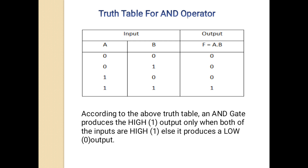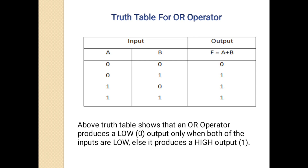In the same way, we can draw the truth table for the OR operator. The only difference is we find the sum of the values of the given variables. In this truth table, all input values are the same as in the AND operator truth table. It produces output 1 when any of the inputs is 1, and output is 0 only when both inputs are 0.